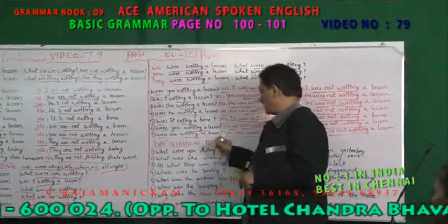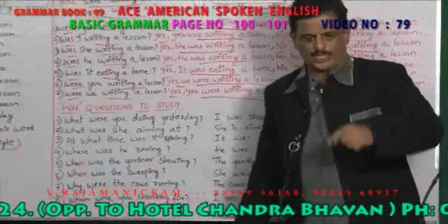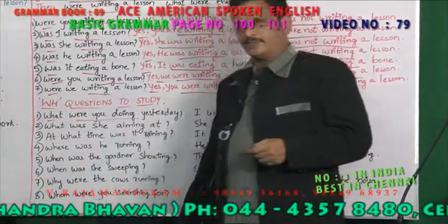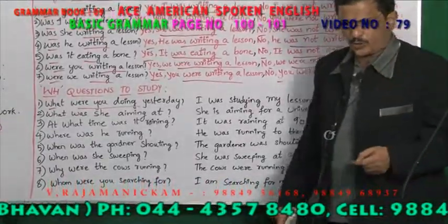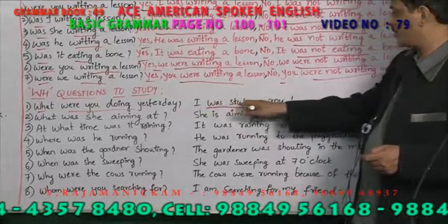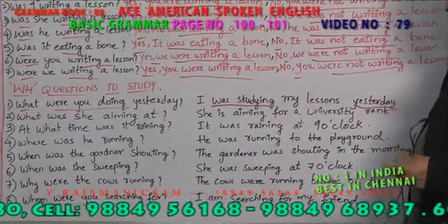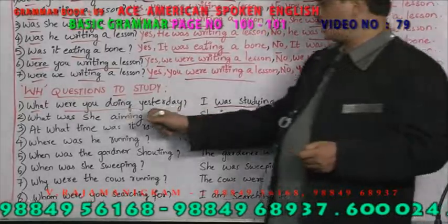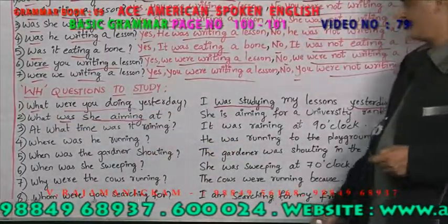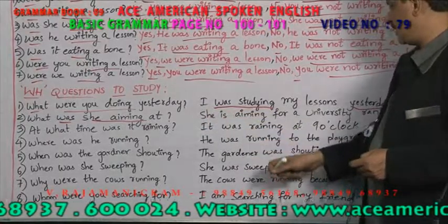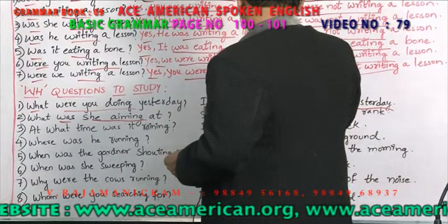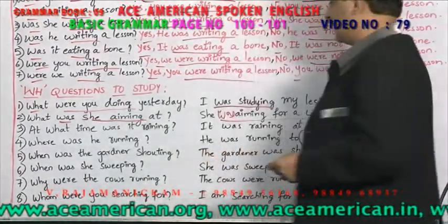What were you doing yesterday? You are asking a question in past continuous. The answer is: I was studying my lessons yesterday. What was she aiming at in past continuous? She was aiming for a university rank.